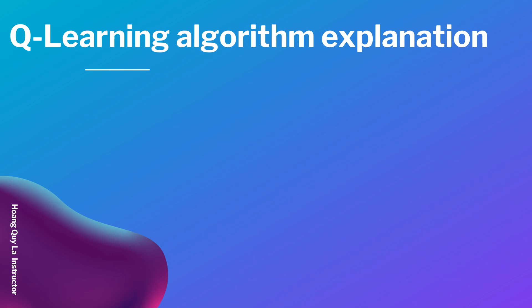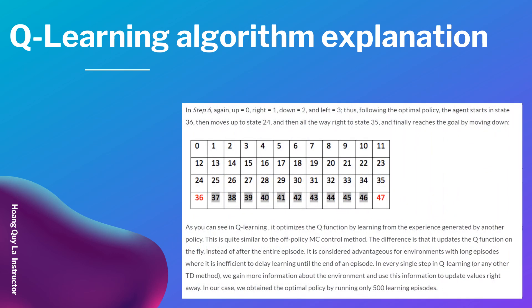In step 6: up equals 0, right equals 1, down equals 2, and left equals 3. Thus, the optimal policy: the agent starts in state 36, moves up to state 24, then moves right to state 35, and finally reaches the goal by moving down. As you can see, the Q-Learning optimizes the Q function by learning from the experience generated by another policy.